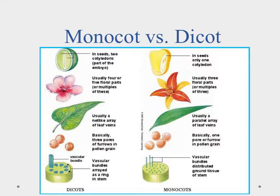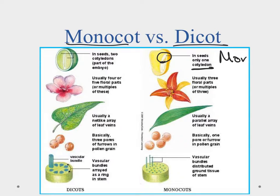The flowering plants can be broken down into two groups: the monocots and the dicots, or monocotyledon and dicotyledon. The 'cot' part refers to the cotyledon, which is the embryonic leaf. In the monocots, mono means one — they have one cotyledon. Our dicots will have two of these embryonic leaves in the seeds. That's why they're named monocot and dicot.